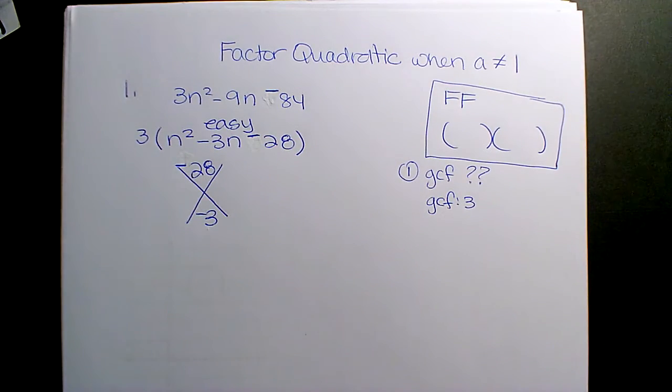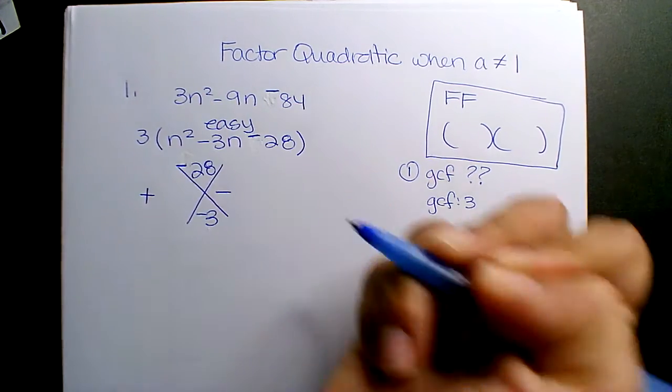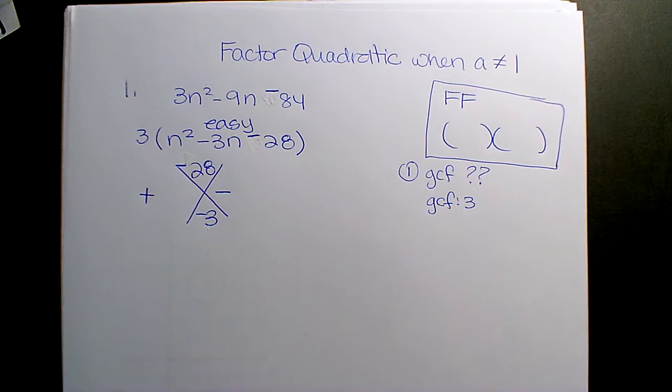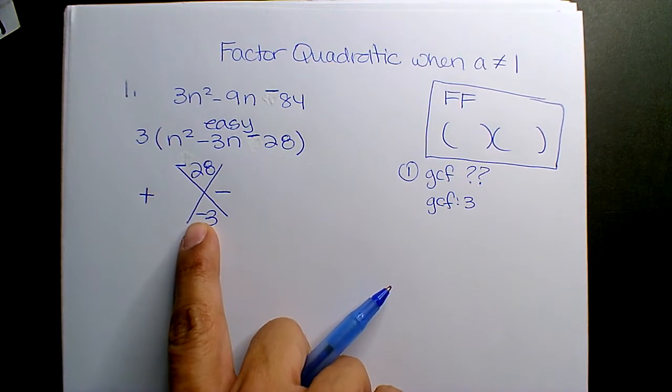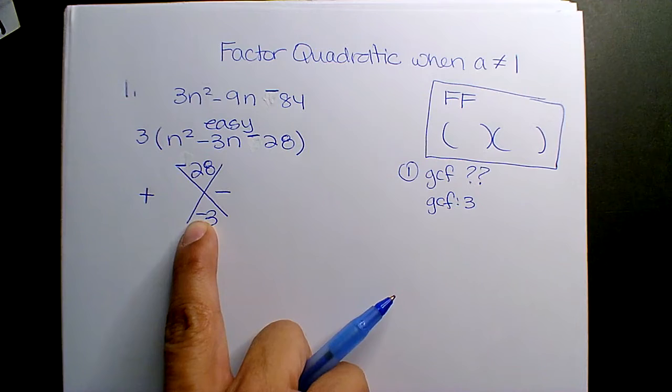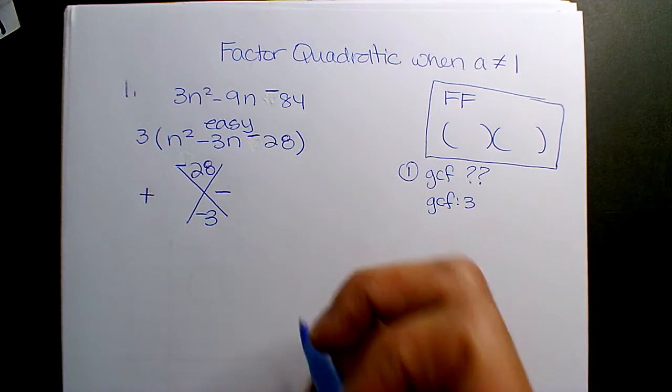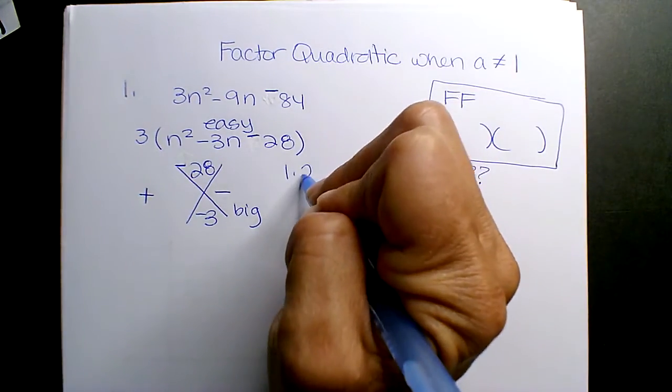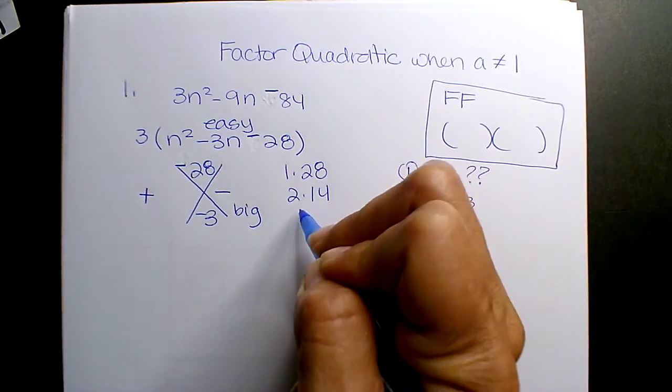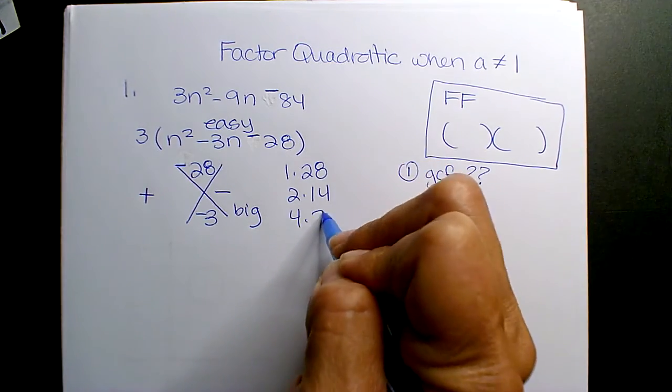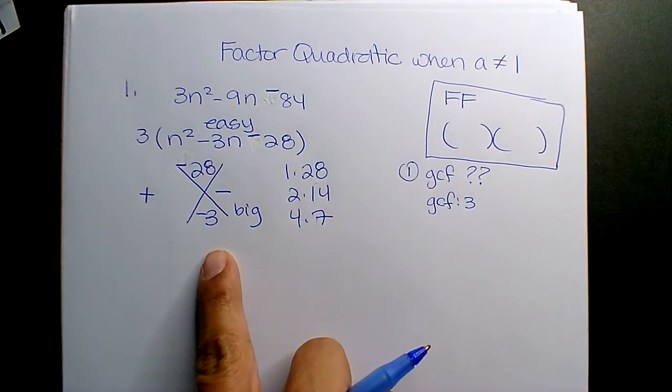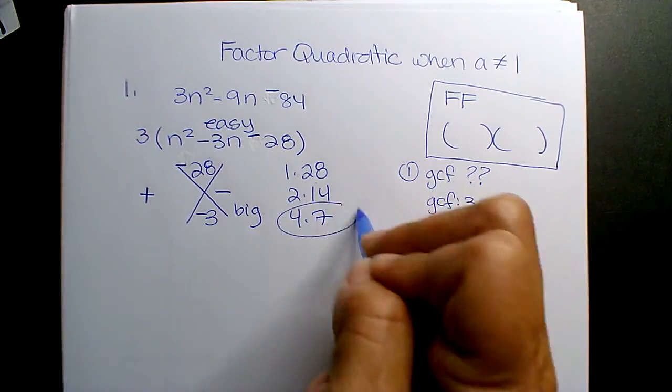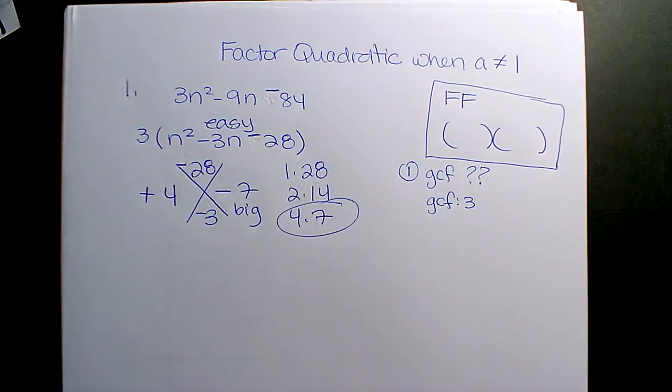28 is negative, which means the only way you get a negative product is one number is positive, one number is negative, correct? Okay, because the 3 is negative, which number, which sign is going to be the bigger one? The negative, very good. Yeah. Okay, so you guys agreed, how do you get 28? 1 and 28, 2 and 14, 3 doesn't divide into it, 4 and 7. When subtracted, which one gives you 3? You guys already said, yeah, 4 and 7. So 4 is a positive, 7 is a negative.